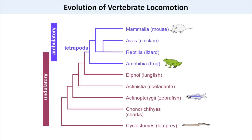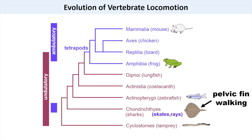While most fish use muscles located along the spine for swimming, there are exceptions to this rule. In skates and rays, the spine remains relatively immobile and the large pectoral fins are used for generating propulsion. More remarkably, in some species of skate, the pelvic fins can be used to generate walking-like behaviors.